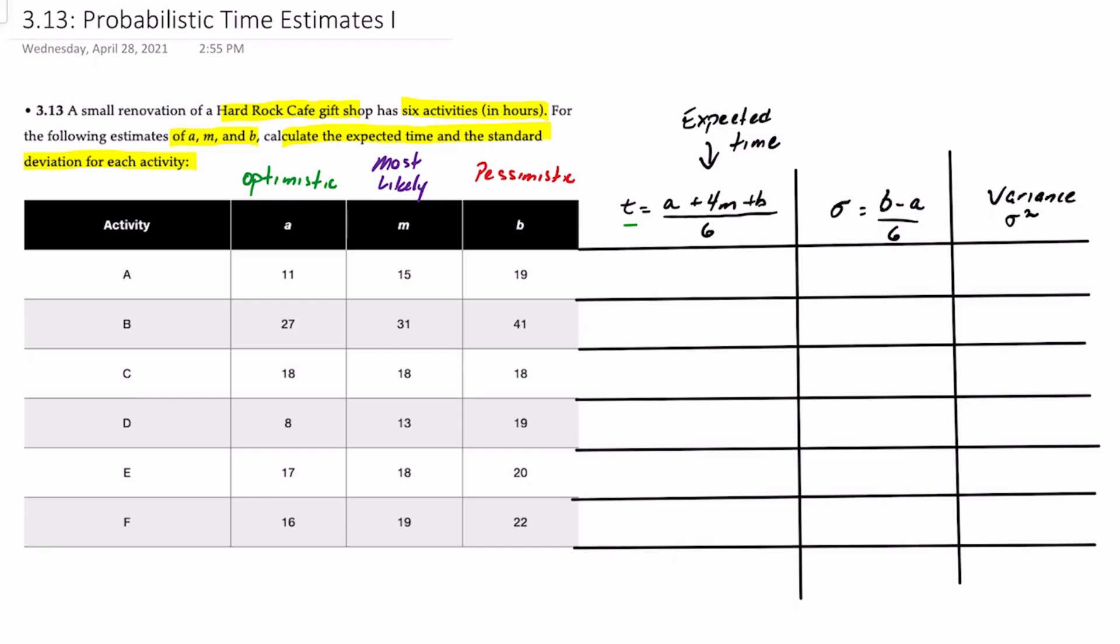So we'll do that for each of the activities first. We'll take A which is 11 plus 4M, so 4 times 15, plus B which is 19, and divide that all by 6. And that should give us an expected time of 15 hours.